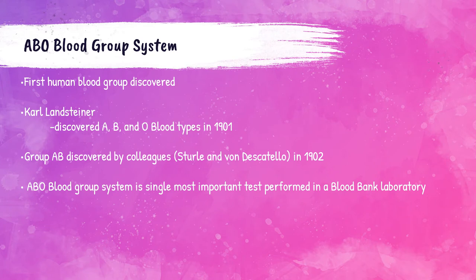The ABO blood group system is the most important of all the blood group systems in all of Blood Bank. It was actually the very first blood group system that was ever discovered, back in 1901 by a man named Carl Landsteiner. Landsteiner drew his own blood as well as the blood of a few colleagues, separated the red blood cells from the serum, and began mixing various red blood cells with various serum samples. This was the first documentation of any type of blood typing.